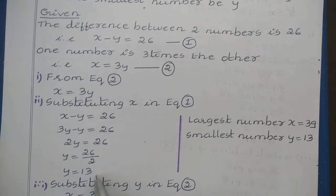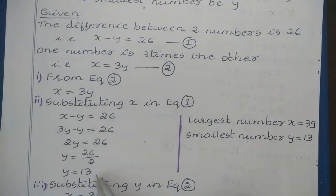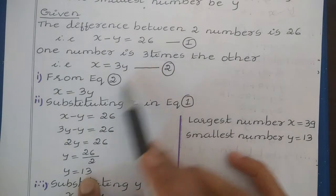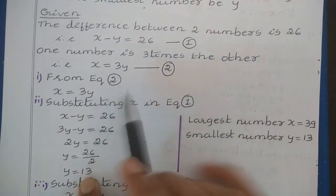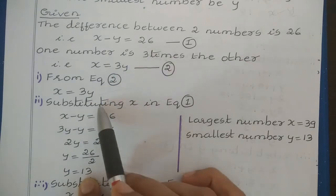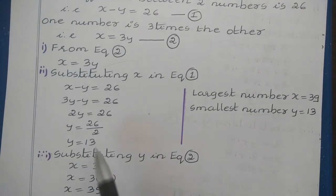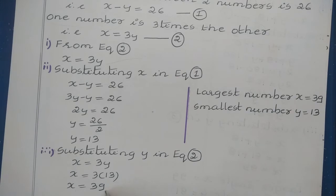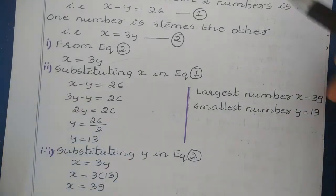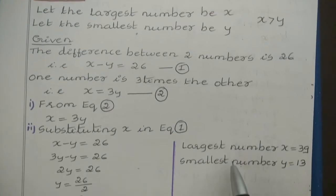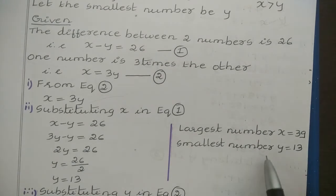So y is equal to 13. Now we got the value of one variable. Substituting this y value in equation 2: x equals 3y, put y equal to 13, so x equals 3 into 13, that is x equals 39. So we got x equal to 39 and y equal to 13. Since x is the largest number and y is the smallest number, the answer is: larger number x equals 39 and smaller number y equals 13. This is the final answer for sub-question 1.